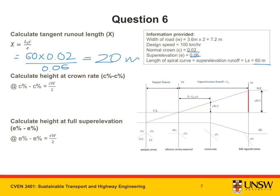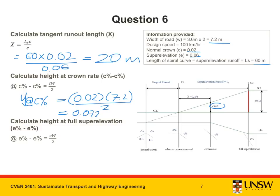For the height at crown rate, y at c percent equals c times w over 2, which is 0.02 times 7.2 over 2, giving 0.072 meters. The height at full super elevation equals e times w over 2, which is 0.06 times 7.2 over 2, giving 0.216 meters.